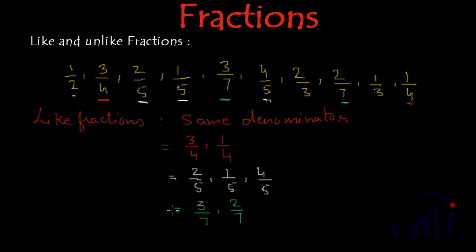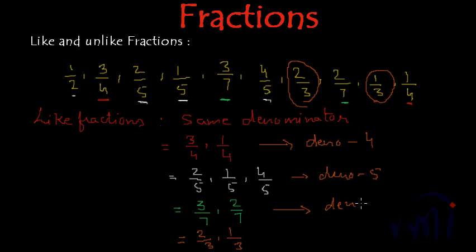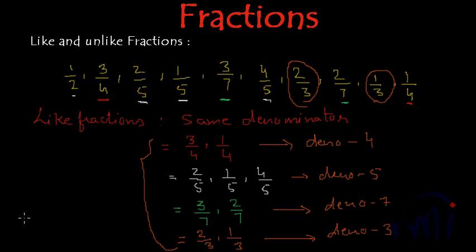And similarly we have one more group of like fractions where the denominator is 3 — this and this. So the fourth group of like fractions is 2 by 3 and 1 by 3. So we have actually got 4 groups of like fractions: the first group has denominator 4, the second has denominator 5, the third has denominator 7, and the fourth group has denominator 3.